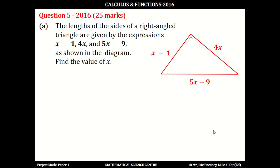2016 Question 5. The lengths of the sides of the right-angled triangle are given by the expressions x minus 1, 4x and 5x minus 9 as shown in the diagram. Find the value of x.